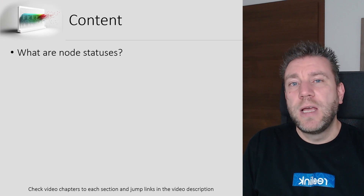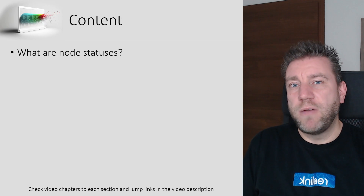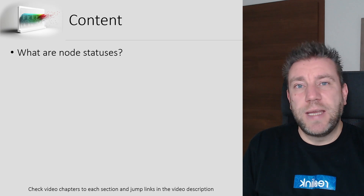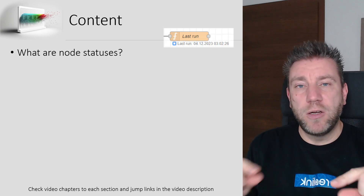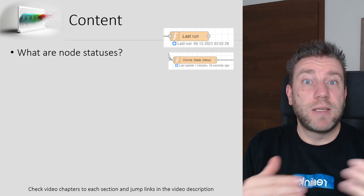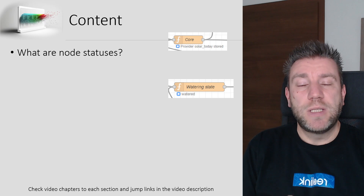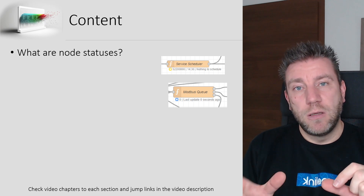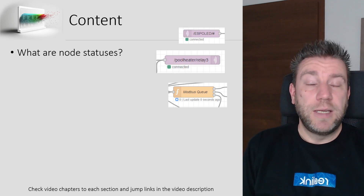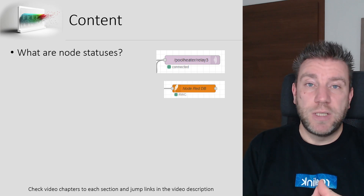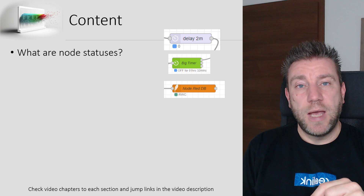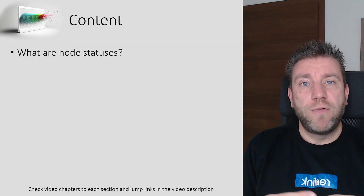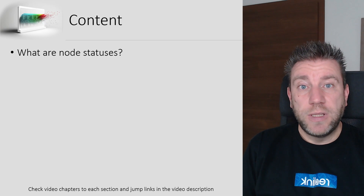If you're not sure what status is — if you've seen my Node-RED related videos, you probably know that every time I create a function node I like to use statuses. These are the small messages that appear under the node, saying something about the processing of the node. The same concept is used in many different nodes. For example, MQTT shows a green dot saying 'connected', turns red showing 'disconnected', or a delay node shows a blue dot with the number of messages being delayed.